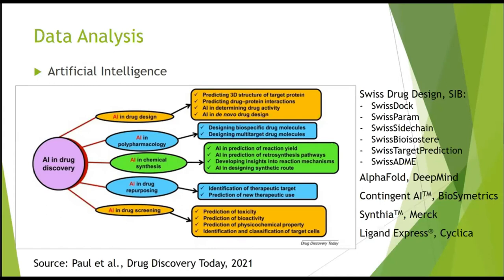Some of the most popular AI platforms used in drug design include the Swiss Drug Design system developed by the Swiss Institute of Bioinformatics — freely accessible and well-functioning. AlphaFold, Google DeepMind's platform for prediction of 3D protein structure. BioSymmetrics, which predicts drug-target interactions. Merck's Synthia, which proposes possible synthesis routes for a given compound. Cyclica's Ligand Express, which finds possible protein targets for a given small molecule. And many others constantly appear.